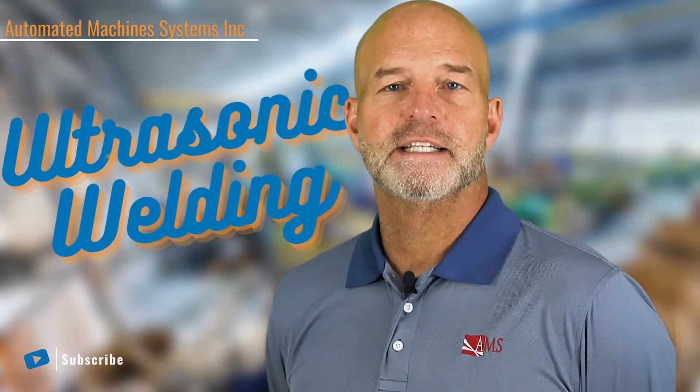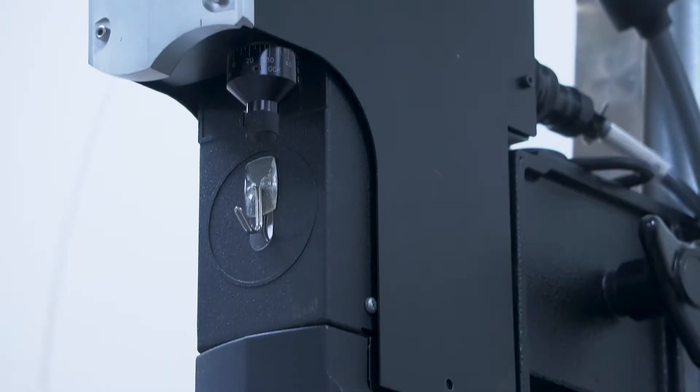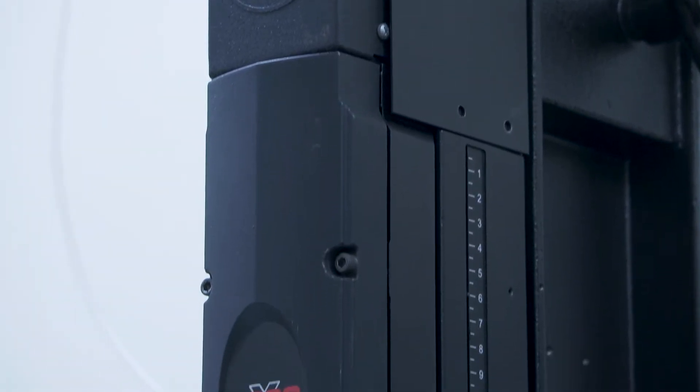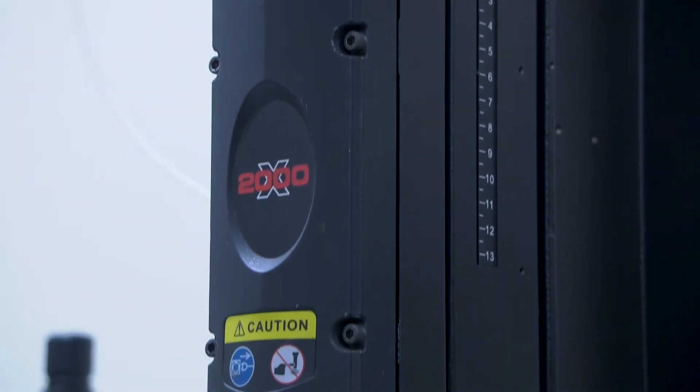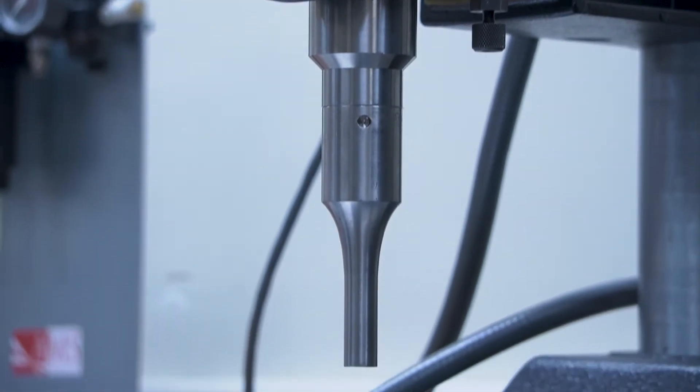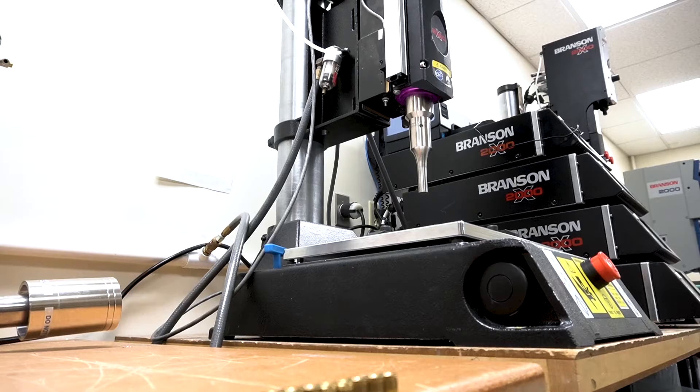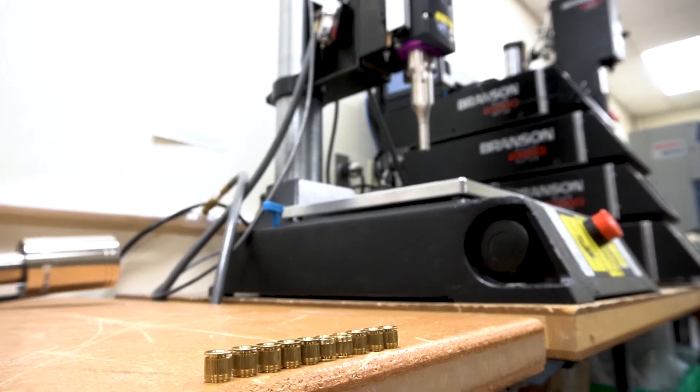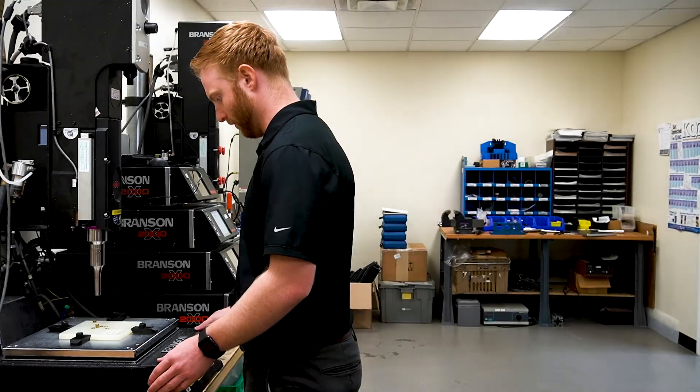During the ultrasonic installation process, the ultrasonic horn converts electrical energy into high frequency vibrations that are delivered through a pneumatic cylinder to apply a precise downward force. These vibrations generate enough heat to melt the plastic around the insert and press the metal into the plastic.